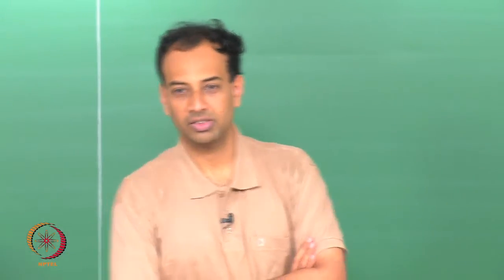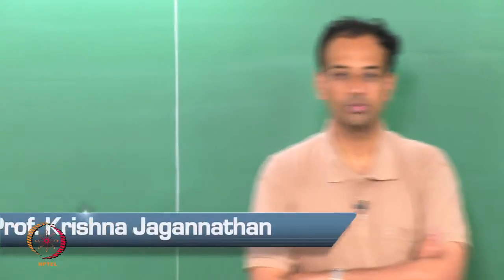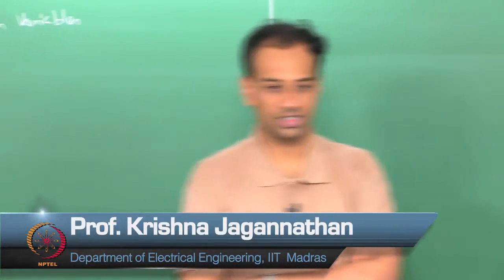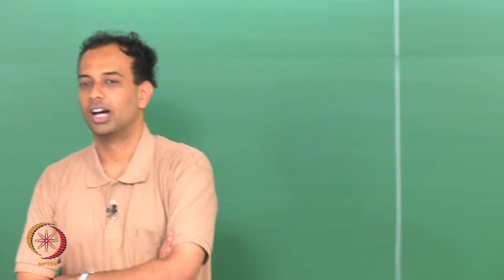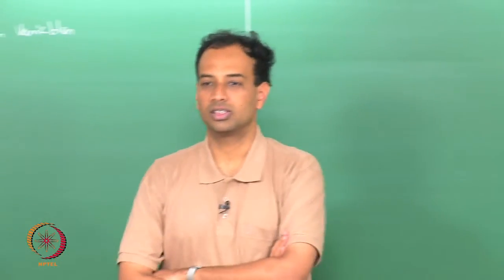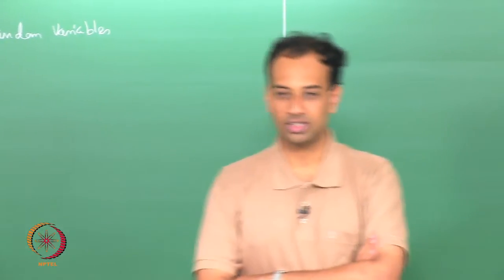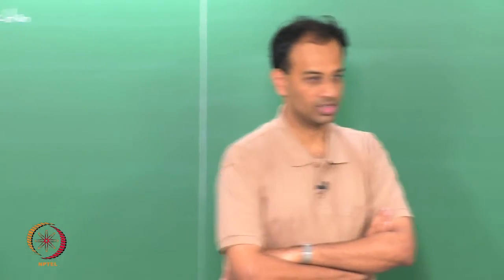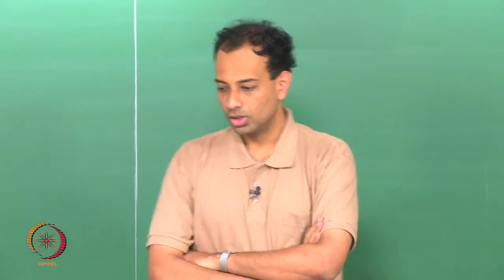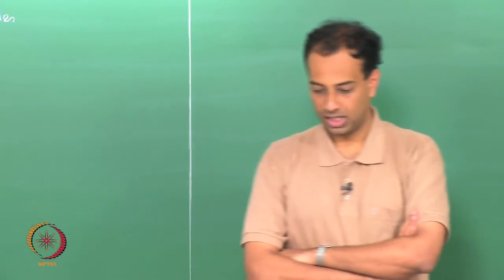Welcome back. Today we will discuss the sum of a random number of random variables. Last lecture we studied sums of random variables — given n random variables x_1 through x_n, we know how to derive the CDF of x_1 plus x_2 up to x_n. Today we discuss the case when the number of random variables you are summing is itself a random variable.